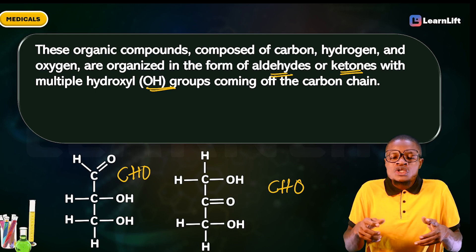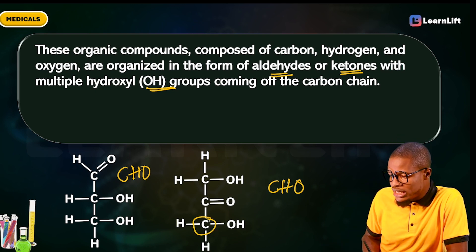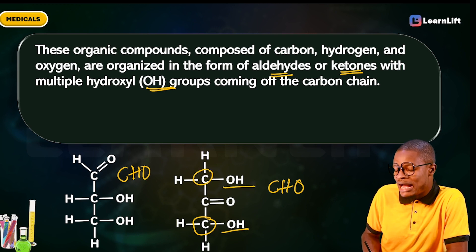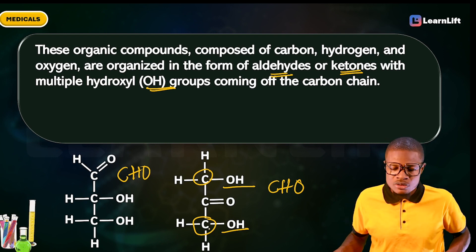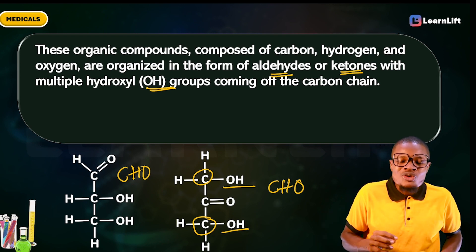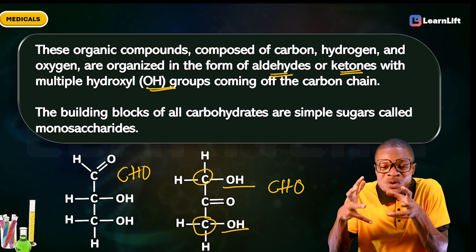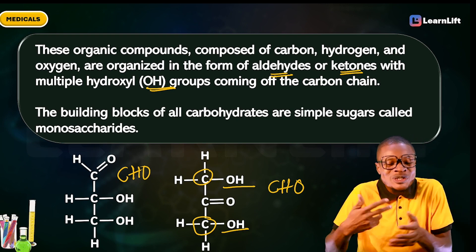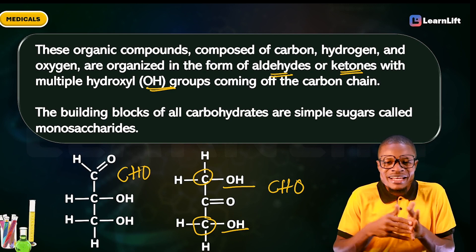Each carbon in the carbon chain has a hydroxyl group coming out of it. It means one carbon chain has one hydroxyl group, another carbon chain has one hydroxyl group — not numerous hydroxyl groups on a single carbon chain. That is the correct interpretation of multiple hydroxyl groups.